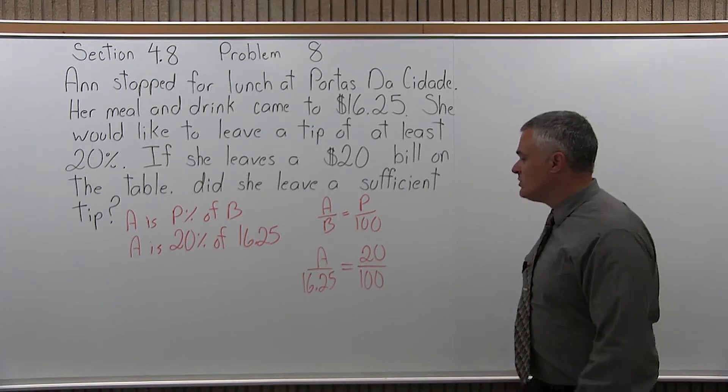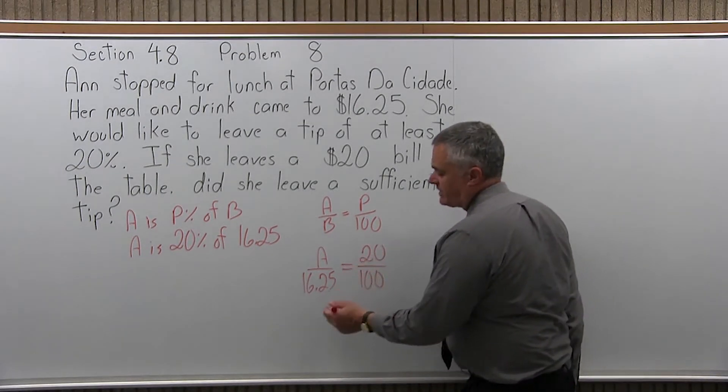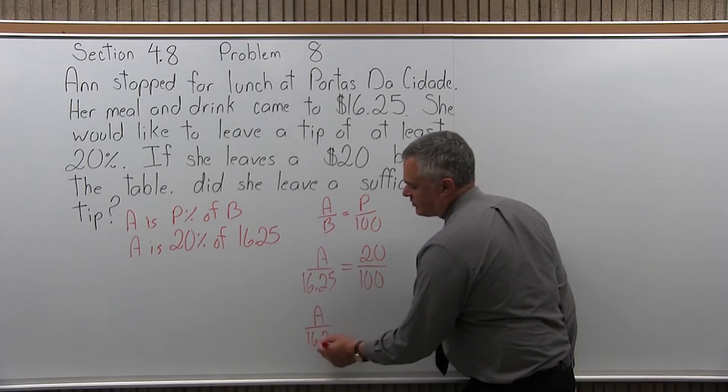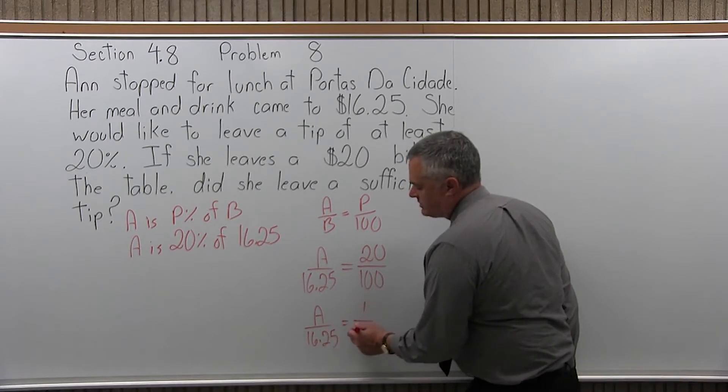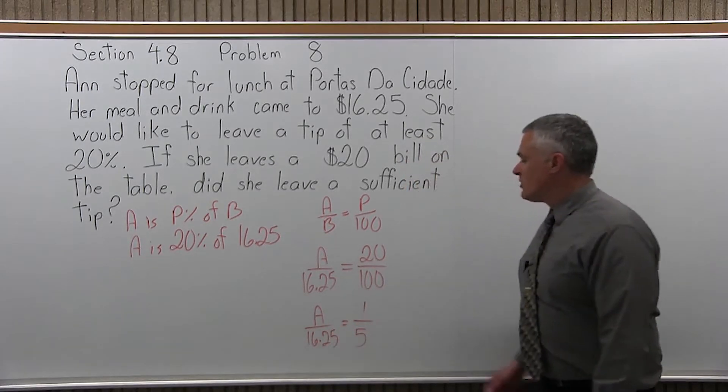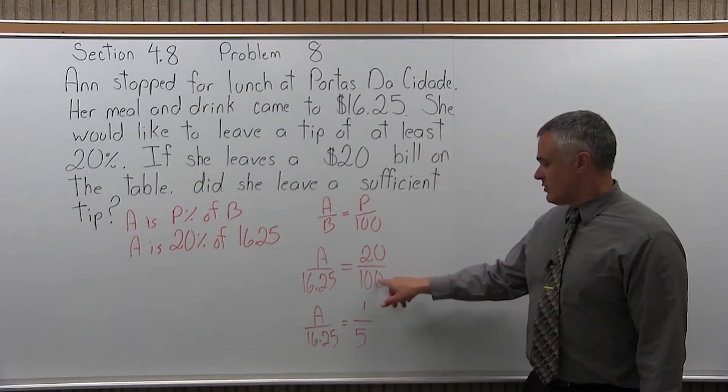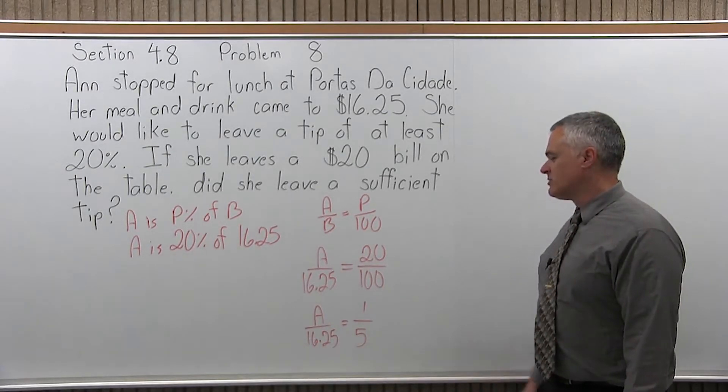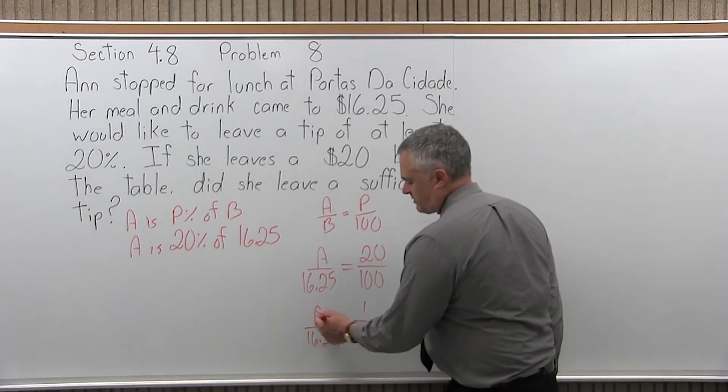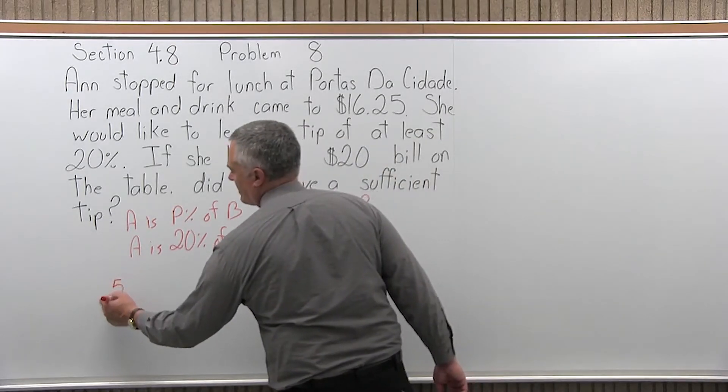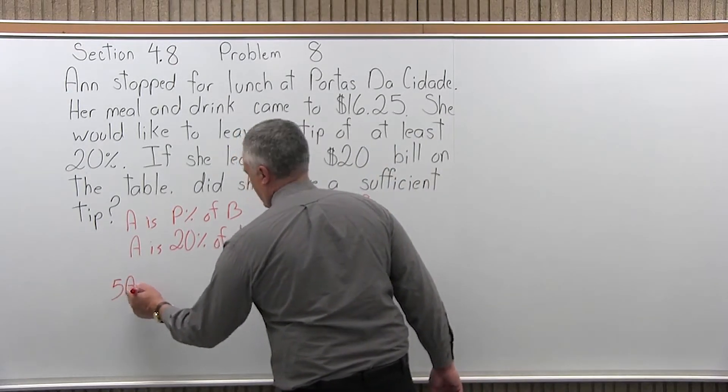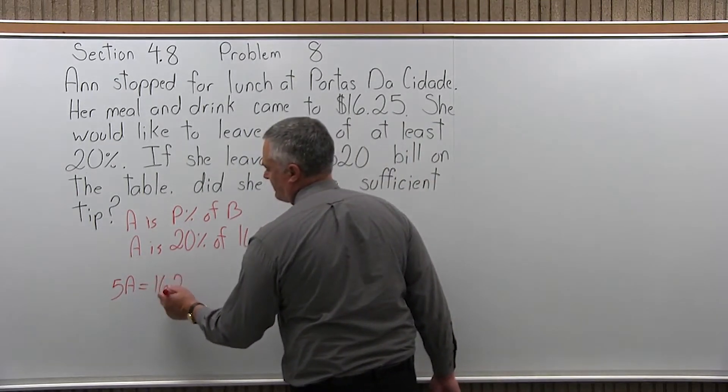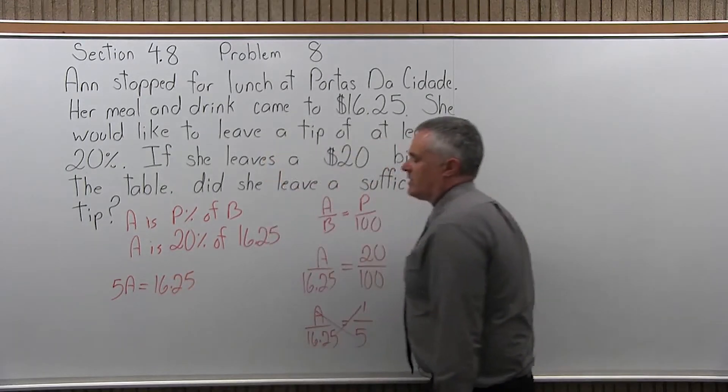Now I can reduce the 20 over 100 pretty nicely, so I might as well. A over 16.25 equals, it reduces to 1 fifth. Because 20 divides into 20 once, and 20 divides into 100 five times. If you don't reduce it, you'll get the same answer, the smaller numbers are a little bit easier to deal with. At this point, I will cross multiply A times 5 is 5A,